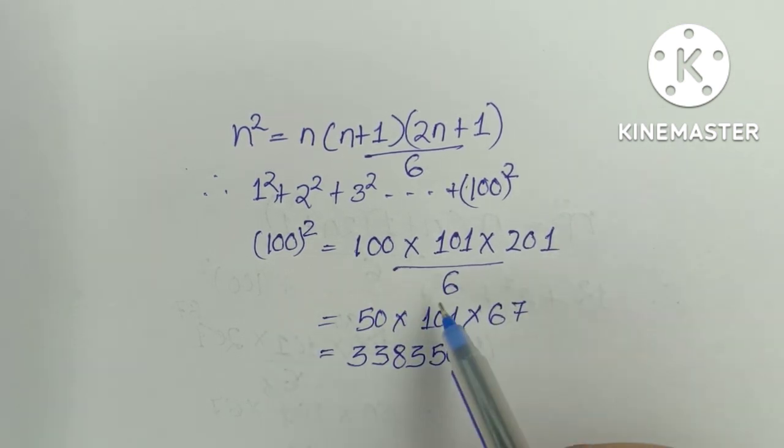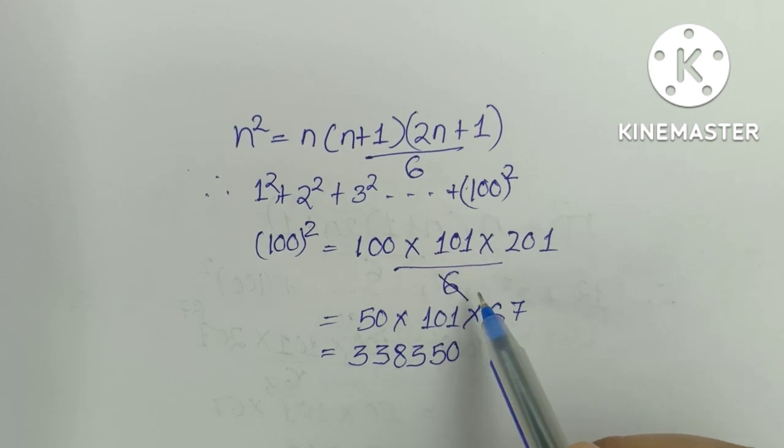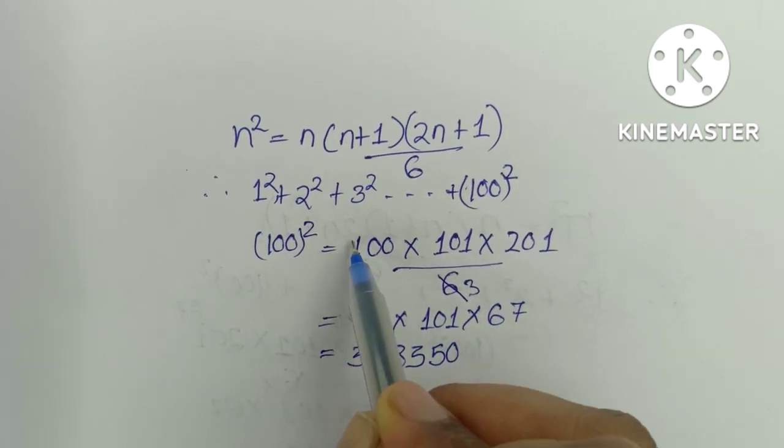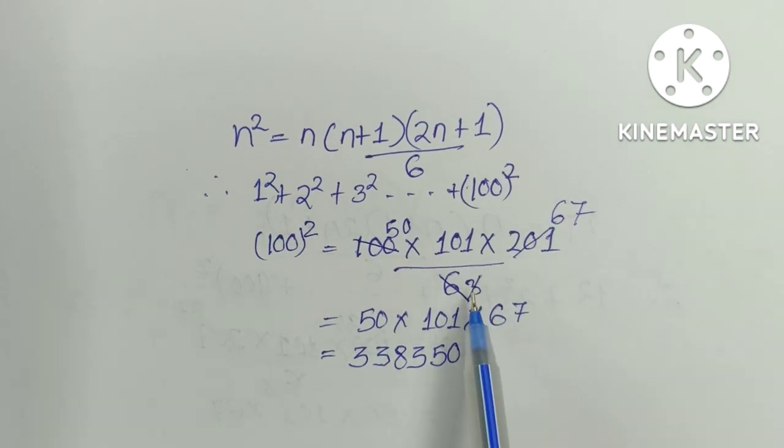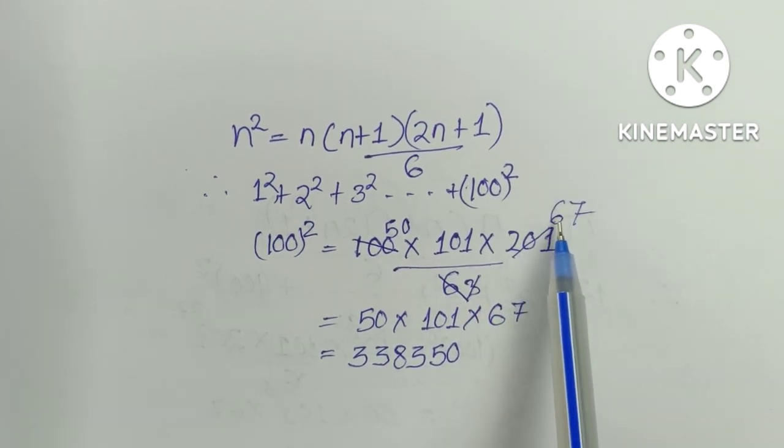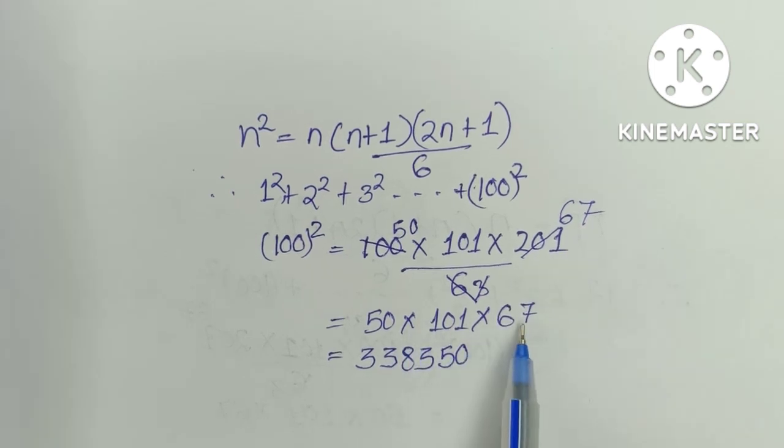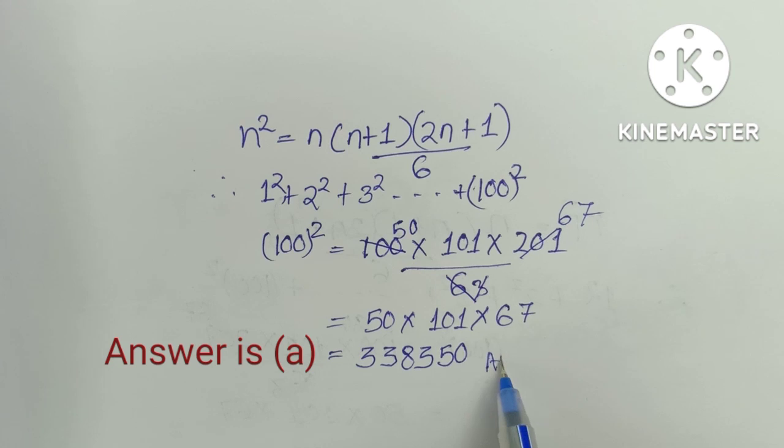100 is N, N plus 1 is 101, 2N plus 1 is 201, divided by 6. Then we can simplify by dividing by 2. 6 divided by 2 is 3, 100 divided by 2 is 50. Then divide 201 by 3 to get 67. Now multiply these numbers together to get the answer. So this is the answer.